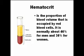Hematocrit is the proportion of blood volume occupied by red blood cells — normally about 46% for men and 38% for women. The kidney also produces a hormone called erythropoietin. This is a separate function from urine production; it is essential in the production of red blood cells.